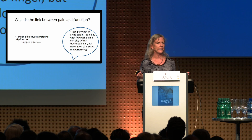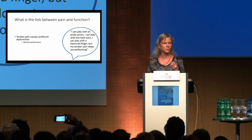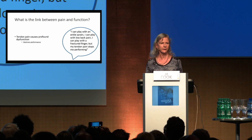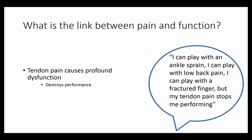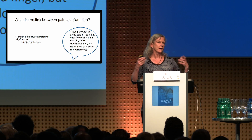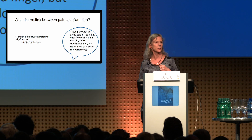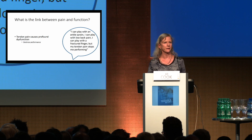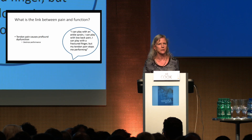What's the link between pain and dysfunction? This is the biggest link of everything we're talking about today. Tendon pain causes profound dysfunction — it affects your ability to be active and to perform if you're a sports person. One of our football players, by May of a season, had had 17 injections across a variety of injuries. He said: 'I've had a fractured finger — I can play. I've had low back pain — I can play. I've had a sprained ankle — I can play. But I cannot play with my tendon pain because it stops me changing direction and jumping.' The relationship between pain and function is the nexus that we aim to disrupt with our physiotherapy.